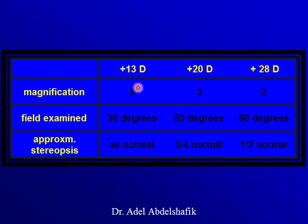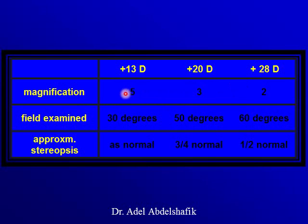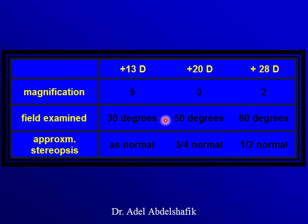In case of a 13-diopter lens, the magnification is 5 times. In case of plus 20 diopters, magnification is 3. In case of a plus 28-diopter examination lens, the magnification is only 2. As we move toward higher diopter lenses, the magnification gets less and less, but at the same time the field seen on the retina gets larger and larger.